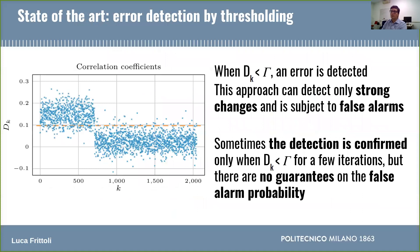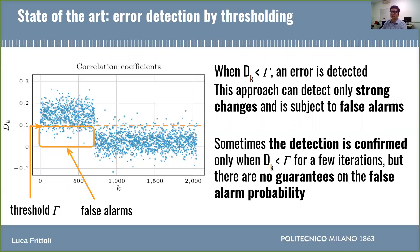A popular approach to improve sequential attacks by error detection is to set a threshold gamma to separate the two distributions. Then an error will be detected when the distinguisher goes below this threshold. However, this approach has a major drawback, as the distributions might be overlapping, as we can see in this example. This results in a large number of false positives, because the threshold is not a suitable instrument to separate these two distributions. Indeed, all these steps of the attack would be considered errors by this criterion because the distinguisher is below the threshold, even though the key is correct.